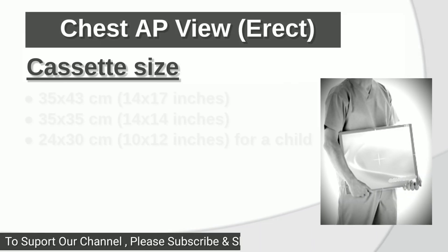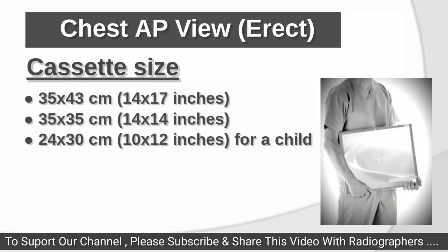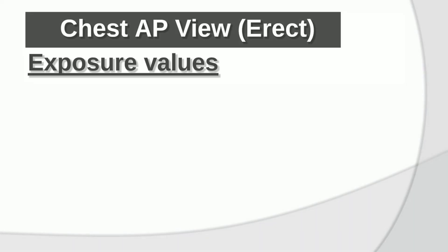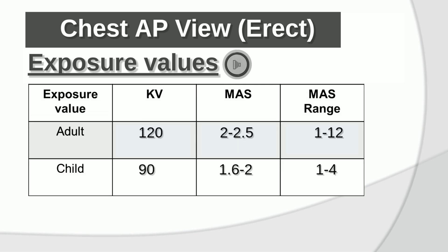Cassette size: 14x17 inches, 14x14 inches, and 10x12 inches for a child. Exposure values for adult: kV 120, mAs 2 to 2.5, range 1 to 12. For child: kV 90, mAs 1.6 to 2, range 1 to 4.